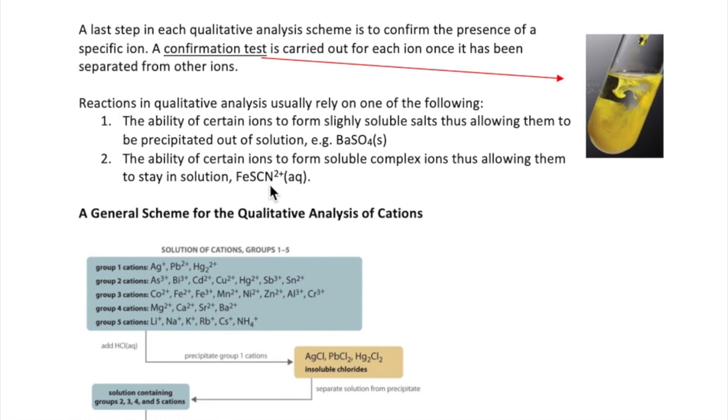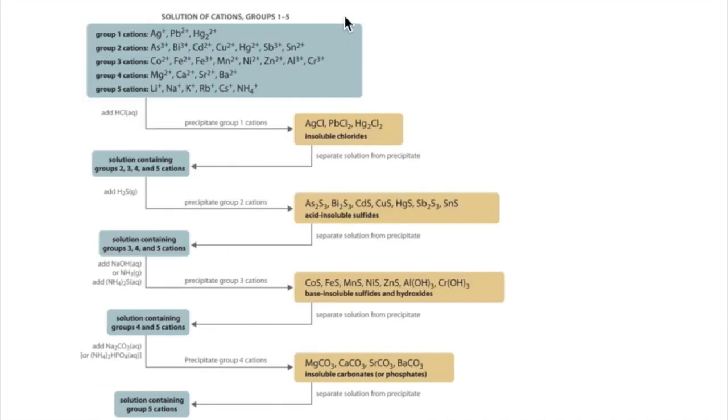As we go through each reaction in a qualitative analysis scheme, you will see that we manipulate ions to go through one of the states, solid or soluble, by using one of these reactions. In analytical chemistry, a well-known scheme to separate cations is given in this flowchart, taken from your lab manual. As you can see, this scheme starts with a large number of cations, which are slowly separated out into various groups of cations, which are then further analyzed. The first step of the separation is the addition of HCl, which will selectively precipitate three cations: silver, lead, and mercury. So these cations are called group one cations. Further separation results in groups two all the way to five.